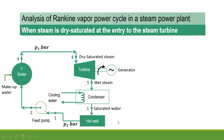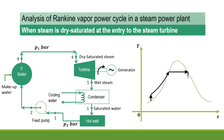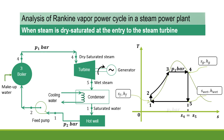Now we will represent this on the T-H diagram. The various processes are shown here. P1 is the boiler pressure and P2 is the condenser pressure. Process 1 to 2 is the pump work — the feed pump provides feed water to the boiler. Process 2 to 3 is the sensible heat supplied in the boiler, and 3 to 4 is the latent heat supplied in the boiler.